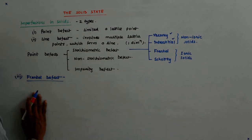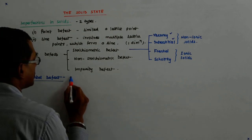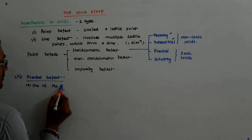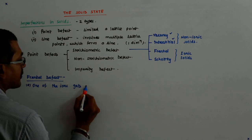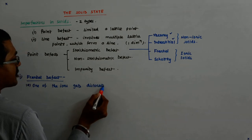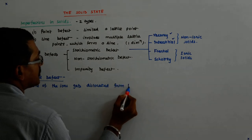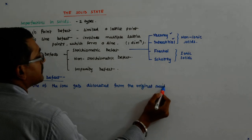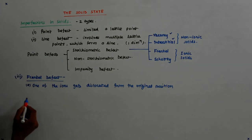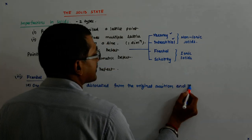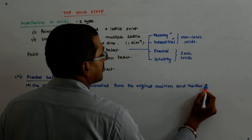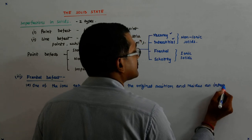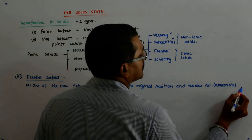Now what happens - here one of the ions gets dislocated from the original position. And resides at an interstitial point.